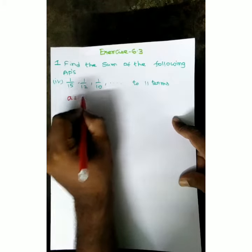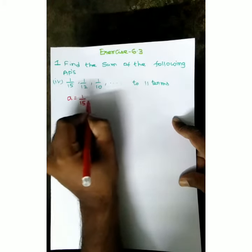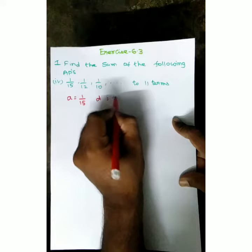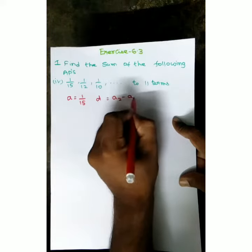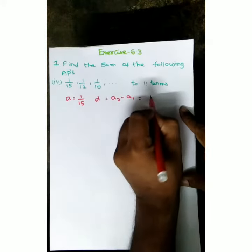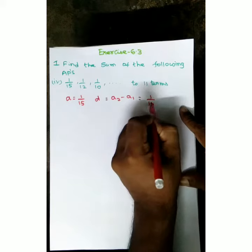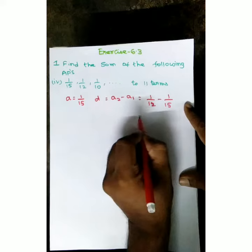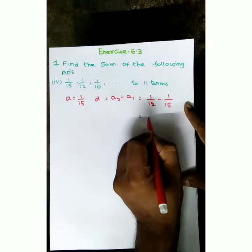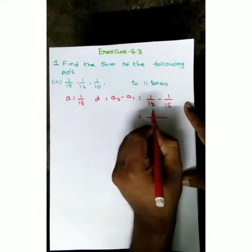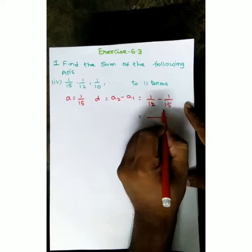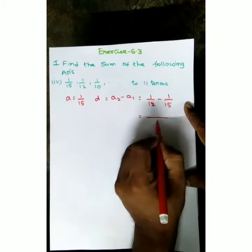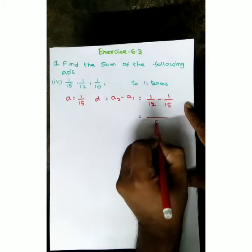Here the A value is 1 by 15. D equals A2 minus A1, that is equal to 1 by 12 minus 1 by 15. The LCM of 15 and 12 is 60.